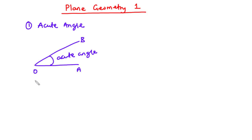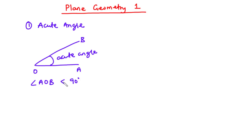We say that the angle AOB is less than 90 degrees. Notice that the two symbols are not the same — this is the angle symbol and this is the less-than sign. The next type of angle we are going to talk about is the right angle.